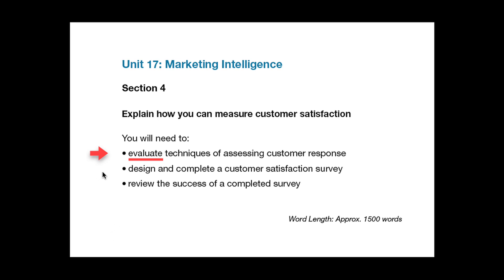Bullet point 2: once you have designed your survey, put a summary in your assignment explaining why you have designed the survey in the way that you have, what you are intending to achieve with it, why certain questions have been included, and whether you foresaw any potential problems and how you tried to overcome them. For the final bullet point, if the survey was not successful in some areas, say why, and give some consideration to how any problems could have been overcome by a different or more effective survey design.